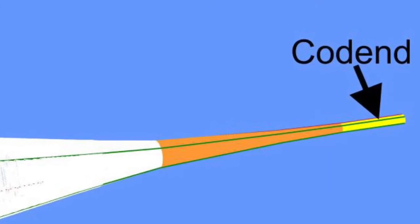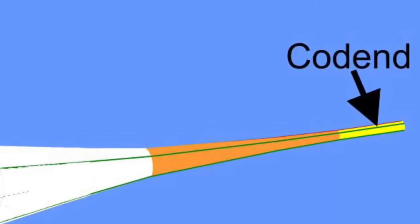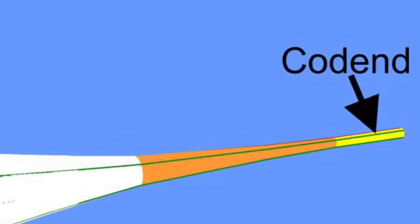The cod end is only 1.5 meters in diameter and 10 meters long. The net's mesh is tighter at the cod end trapping the pollock.